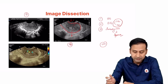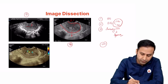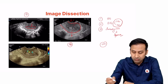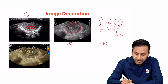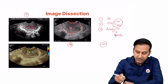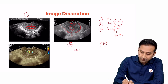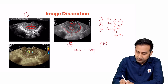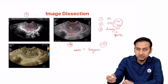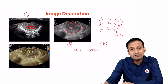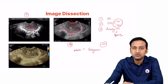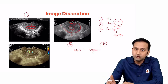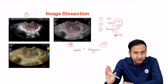Now come to the endometrial cavity. Look at this endometrial cavity — how beautiful and slit-like it appears, with the two lips of the endometrium closed. On the other hand, we can see something appearing white. What do we call white in sonography? Echogenic. There is an echogenic lesion placed inside the endometrial cavity — a pathology in the endometrium.